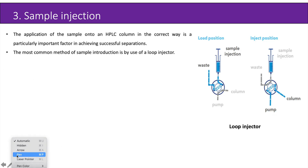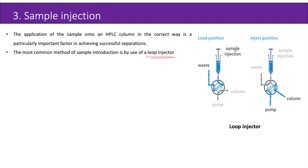The next step is sample injection. The application of the sample onto an HPLC column is a particularly important factor in achieving successful separations. The most common method of sample introduction is by use of a loop injector. In the load position the sample is within the sample injector, and in the inject position the sample is transferred via pump into the column.